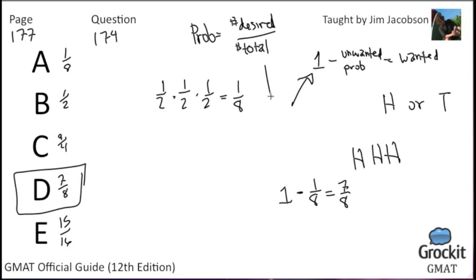We also could have written out all of our choices. There's only eight, so we have tails, tails, tails, and then we do ones with heads coming up once. Order does matter. Heads, tails, tails is different from tails, heads, tails, and that in turn is different from tails, tails, heads. Now we do our ones with heads appearing twice.